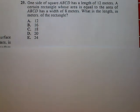One side of a square has a length of 12 meters. A certain rectangle, whose area is equal to the area of the square, has a width of 8. What is the length in meters of the rectangle?